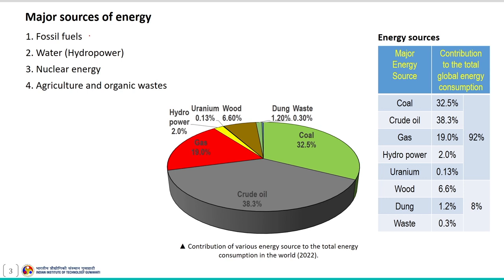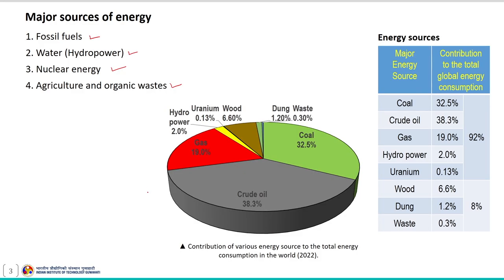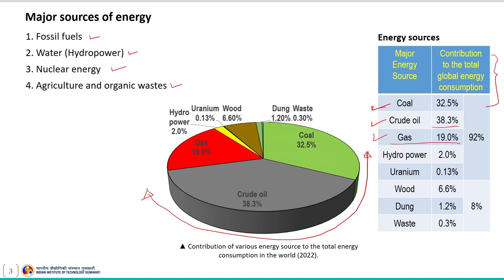Major sources of energy include fossil fuels, water that is hydropower, nuclear energy, agriculture and organic waste. The average percentage consumption trend of various primary energy sources is indicated in this figure, with values also tabulated. The contribution of coal as a source to total energy consumption around the world is around 32.5%, crude oil is around 38.3%, and gas is around 19%.